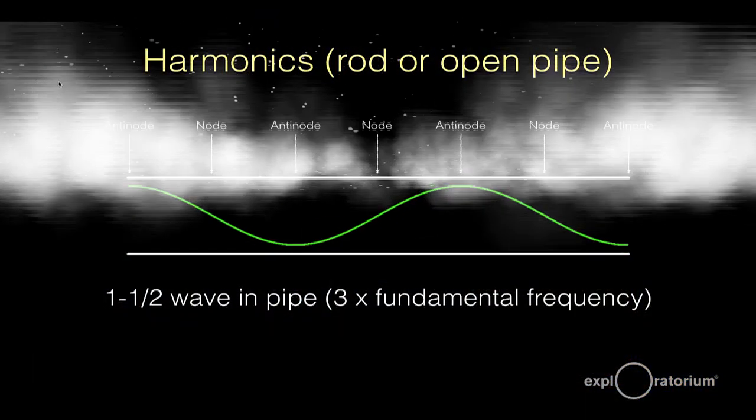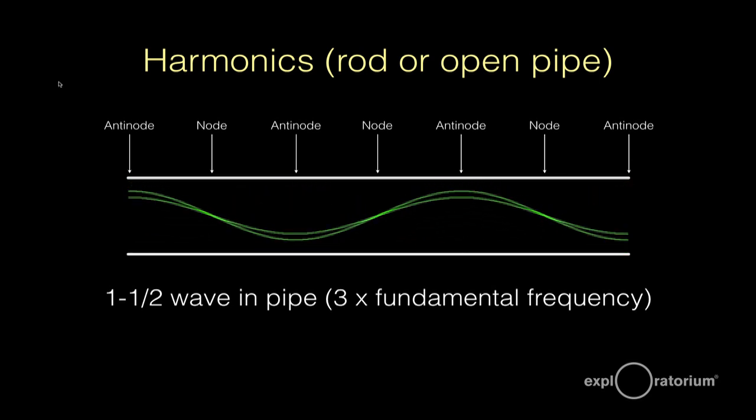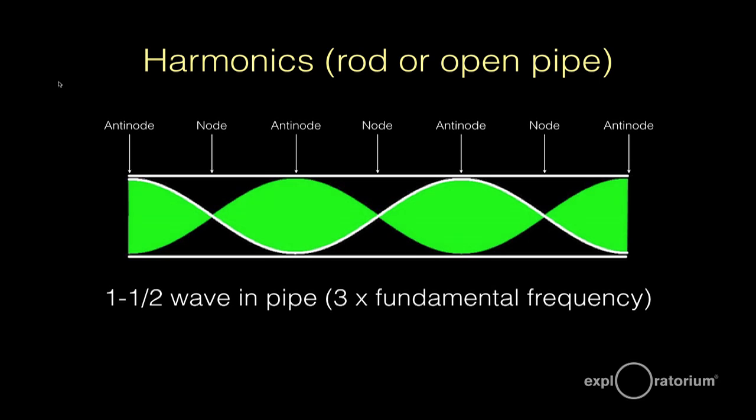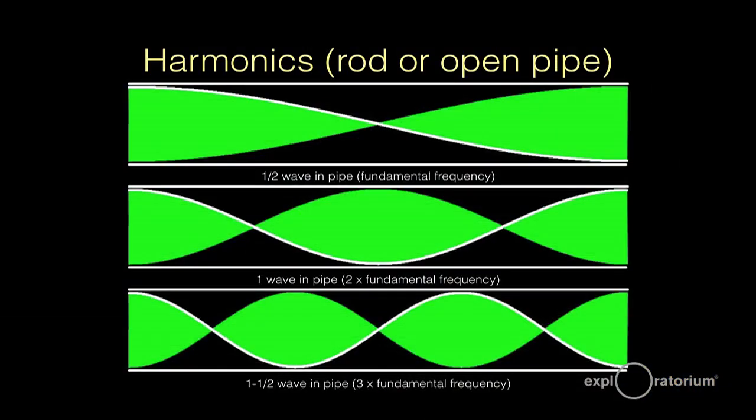Here's the next one: now we have one and a half waves. We have anti-nodes at both ends and a bunch of nodes and anti-nodes in the middle. The important part is that there are anti-nodes at both ends. Here we're fitting one and a half waves in the tube. So we went one half, one, one and a half waves — that's one, two, three. If the fundamental frequency is a certain frequency, the next harmonic is twice that, three times that. The closed pipe was one, three, five; this open pipe is one, two, three — anti-nodes at both ends.